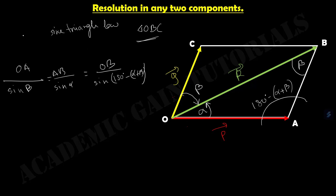To apply the sine rule: OA is opposite angle beta, so we write OA divided by sine beta. AB is opposite angle alpha, so we write AB divided by sine alpha. And OB is opposite angle (180 degrees minus alpha plus beta), so we write OB divided by sine(180 degrees minus alpha plus beta).